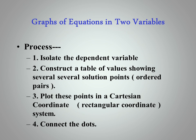How do we graph equations in two variables? First of all, isolate the dependent variable. Get it on the left-hand side of the equal sign, and everything else on the right. Construct a table of values showing several solution points. The calculator does this. Plot these points in a Cartesian coordinate rectangular coordinate system, and connect the dots.